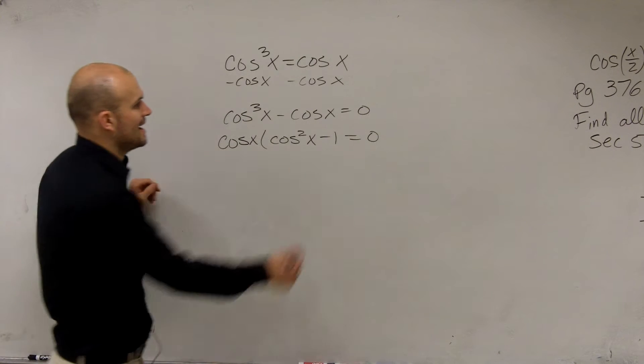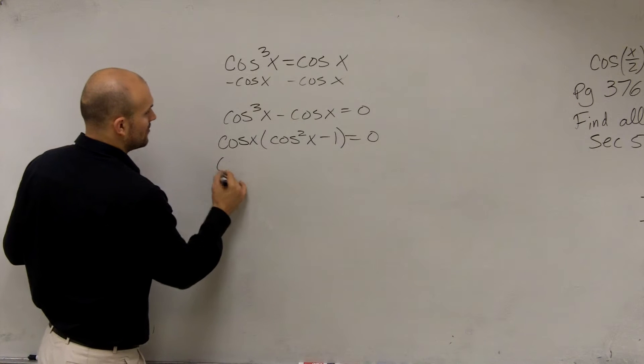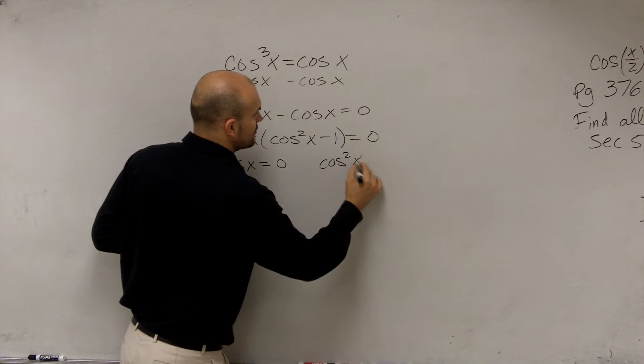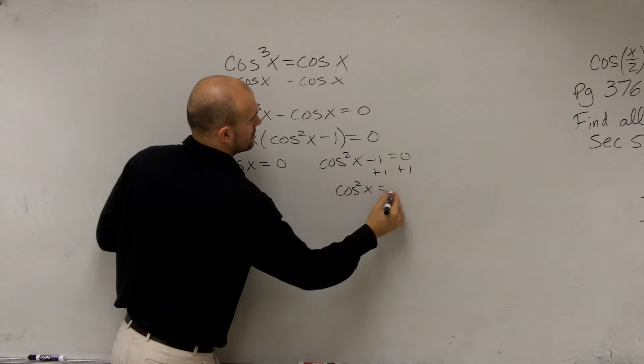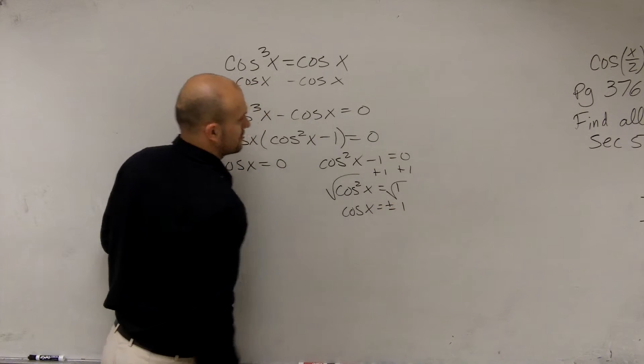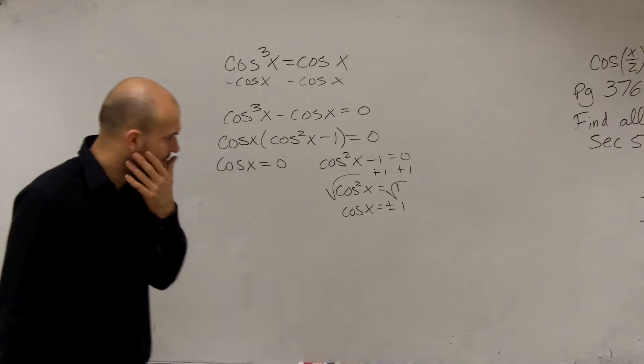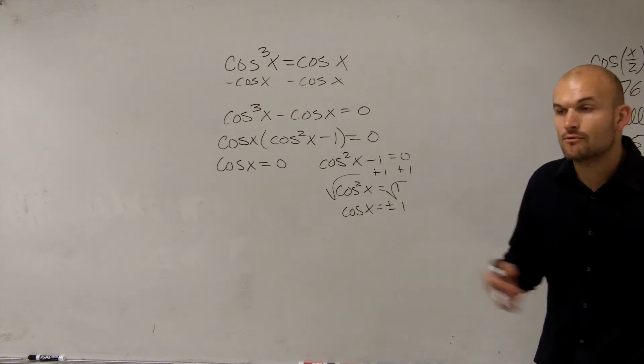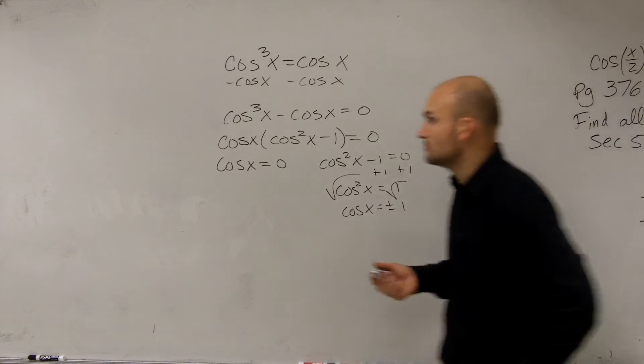Now I have cos x times (cos²x - 1) = 0. Therefore, by applying the zero product property, I can say cos x = 0 and cos²x - 1 = 0. So I have cos x = ±1 and cos x = 0. Now we need to look at our unit circle and determine when is cos x equal to 0 and when is cos x equal to ±1.